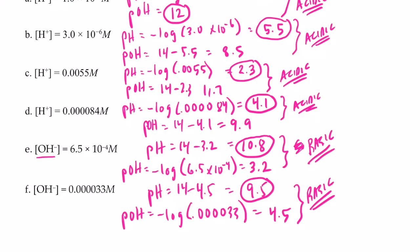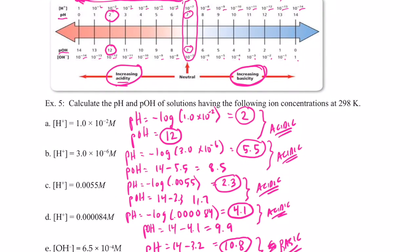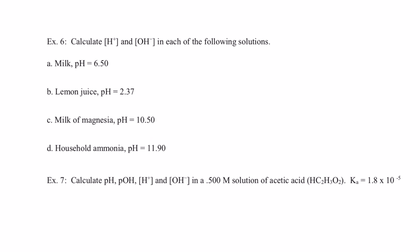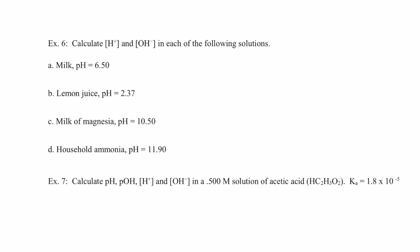So pH and pOH calculations should be pretty easy for you — they should be busy work. And then determining if they're acidic or basic should also be pretty straightforward. Remember, as the pH gets lower, it becomes more acidic. Lower than 7 would be acidic. If it gets higher than 7, then it's considered to be basic. And if the pH is 7, then it's going to be neutral. In the next video, we're going to do more practice calculations, so you can come back for the second video on pH and pOH calculations. We'll see you soon. Bye-bye.